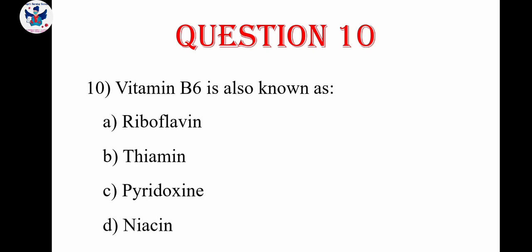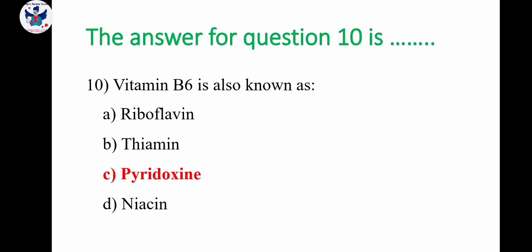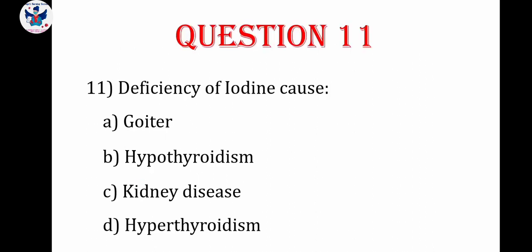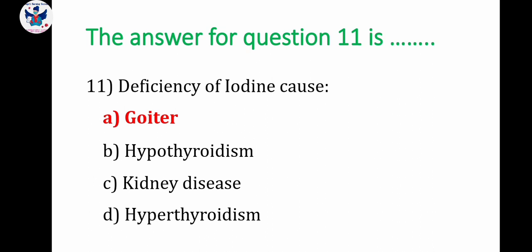Question number 10: vitamin B6 is also known as pyridoxin. Question number 11: deficiency of iodine causes — A. Goiter, B. Hypothyroidism, C. Kidney disease, D. Hyperthyroidism. The correct answer is goiter.